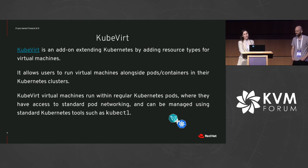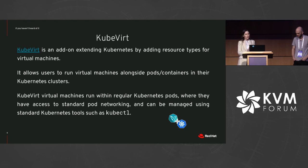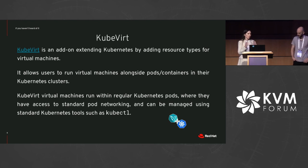KubeVirt is an add-on that extends Kubernetes. It adds resources for virtual machines, making it possible to run virtual machines alongside pods in a Kubernetes cluster. The VMs can be managed in the same manner as regular pods using the same tools like kubectl. Since the basic unit of Kubernetes is a pod, we run the virtual machine inside a container that is inside the pod. We connect the VM networking to the pod networking so the VM can communicate with other entities in the cluster the same way pods do.